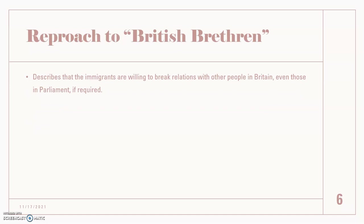Now, reproach to British brethren. This basically describes that the colonists were willing to break relations with other people in Britain and even those in parliament if necessary for them to be treated the way they deserved. Basically, if they needed to practice their natural rights but these people were limiting them, they would break those relations and still practice their rights.